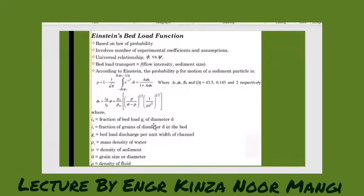Where the terms are: ib is the friction fraction of the bed load gs of the diameter d, ib is the fraction of the grains of the diameter d, gs is the bed load discharge per unit width of the channel. We will calculate the bed load per unit width of the channel. Then there is γw again, it's the mass density of the water, σ is the density of the sediment, d is the grain size, and ρ is the density of the fluid.